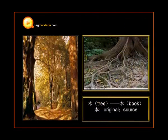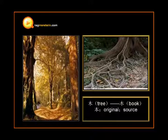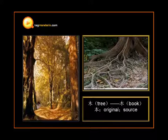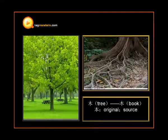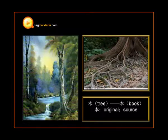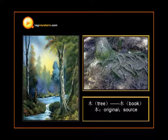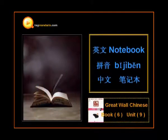Now let's get back to 本 (Ben). Ben also means the root of a tree, which indicates the origin or source of a thing. Let's analyze the stroke of Ben. There is a horizontal character stroke at the bottom of the straight-down character stroke of 木 (Mu), meaning a tree, which symbolizes the root of the tree. So this is Ben, and that's why it indicates the original of a certain matter.